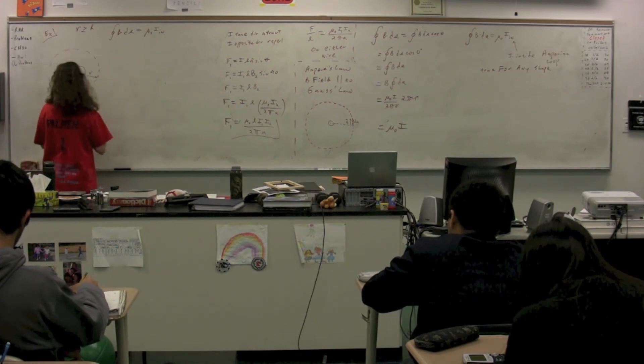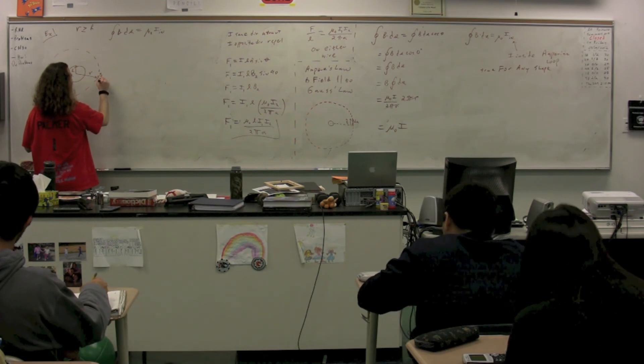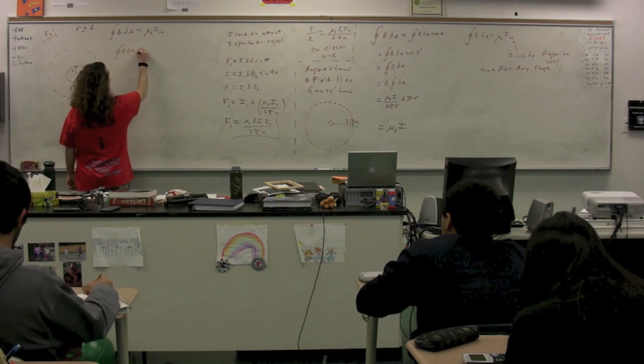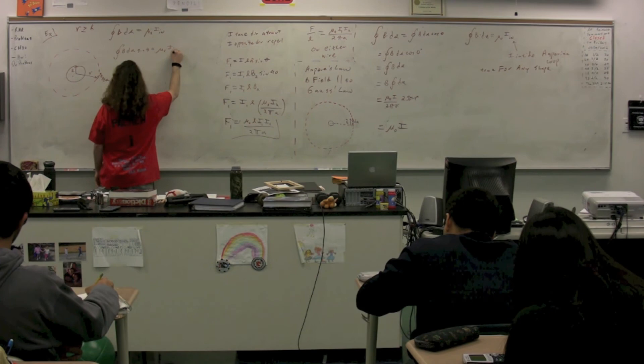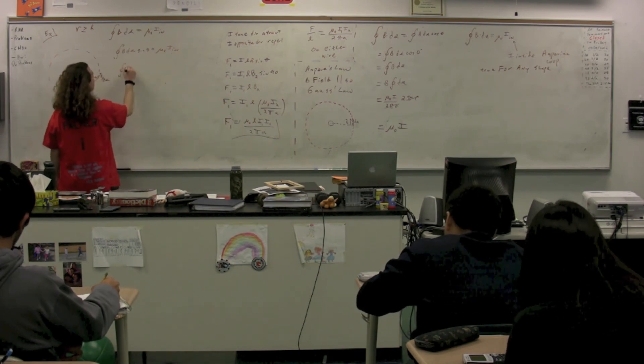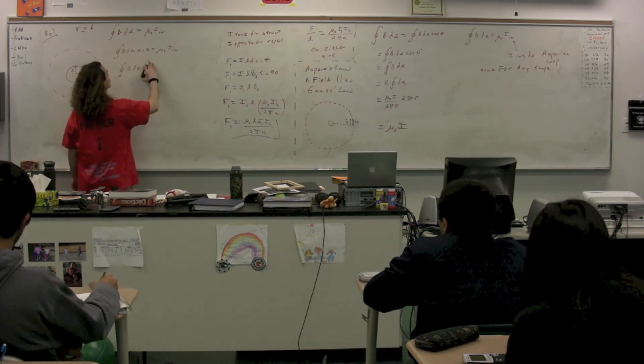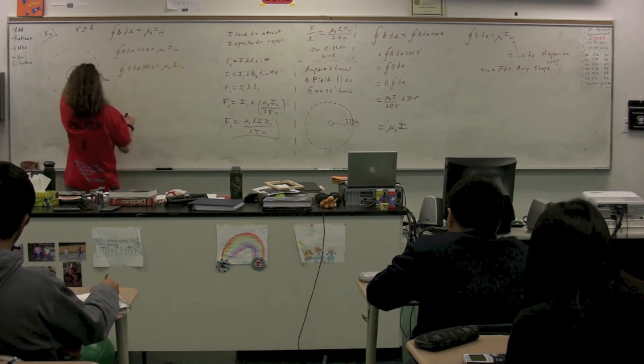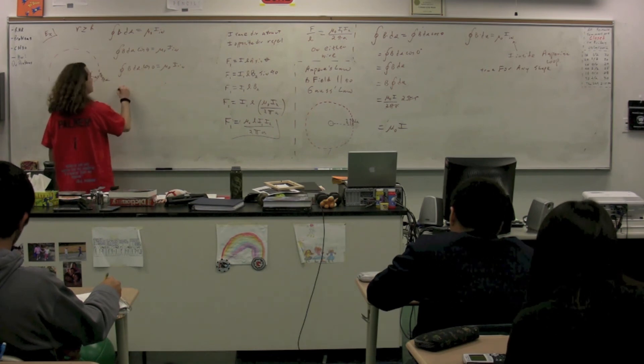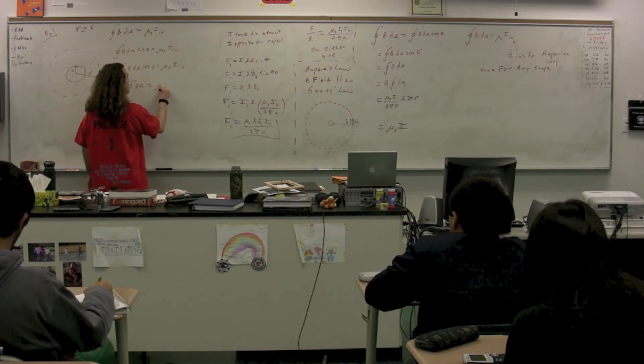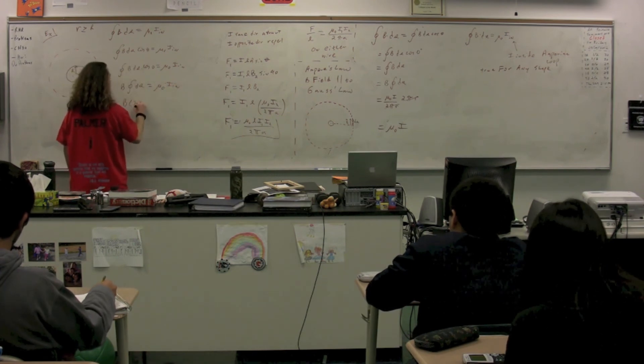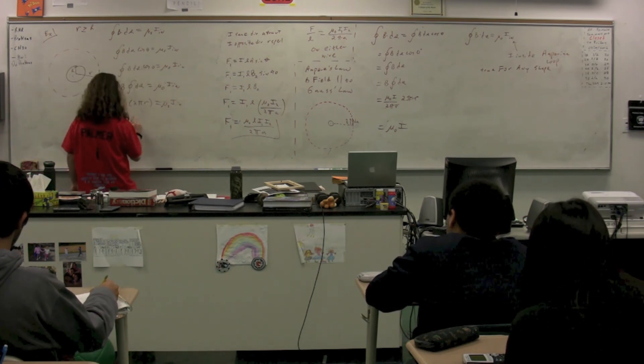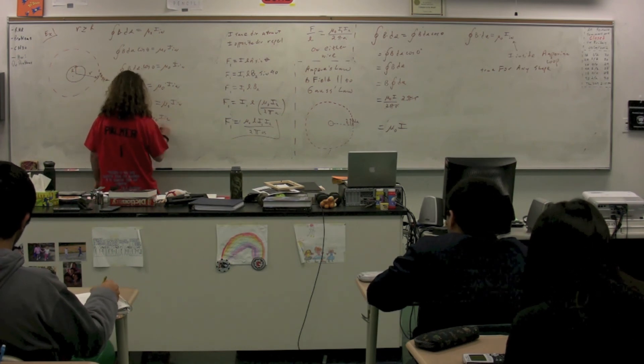And we're going to have B and ds are going to be in the same direction. So on the left-hand side, we have the closed loop integral of B ds times the cosine, sorry, cosine of 0, which is equal to mu naught times the current on the inside. Now, we know cosine of 0 is just 1. We can take B outside the integral. So we have ds, which is equal to mu naught times the current on the inside. So B times 2 pi r, which is the circumference of the Amperian loop, which is equal to mu naught times the current on the inside. In other words, the magnetic field is equal to mu naught times the current on the inside divided by 2 pi r.